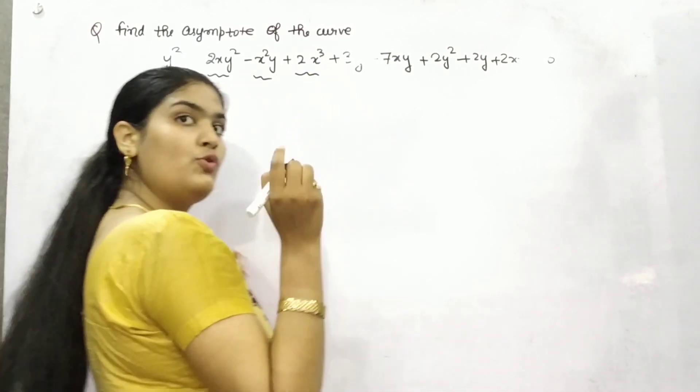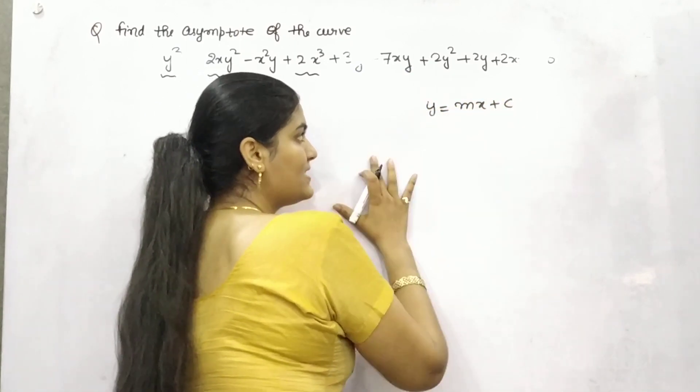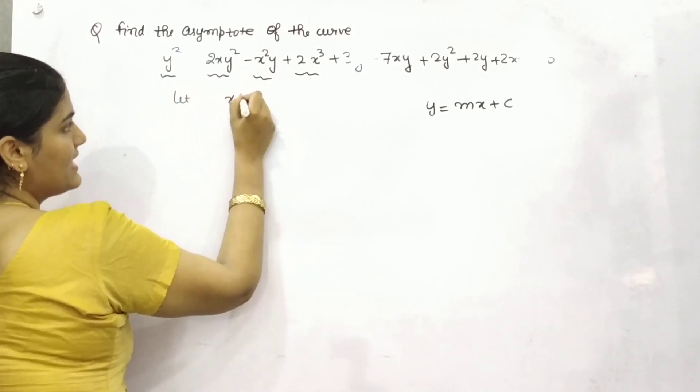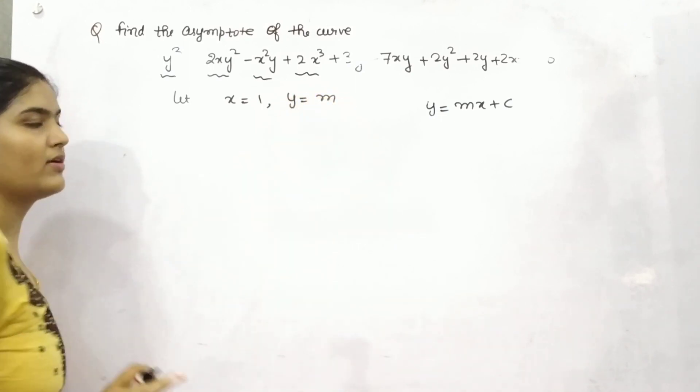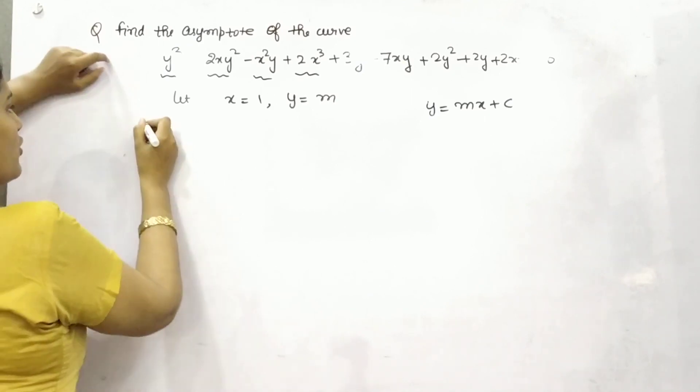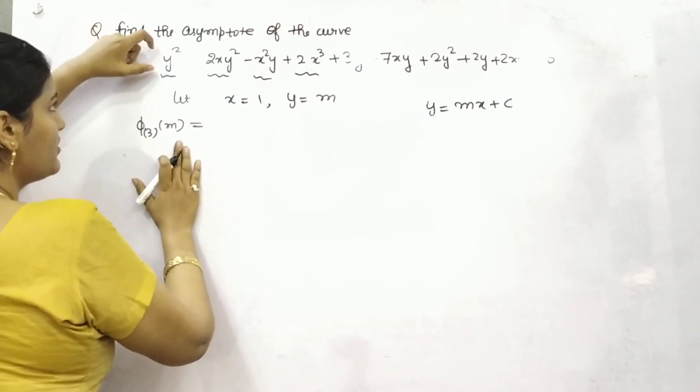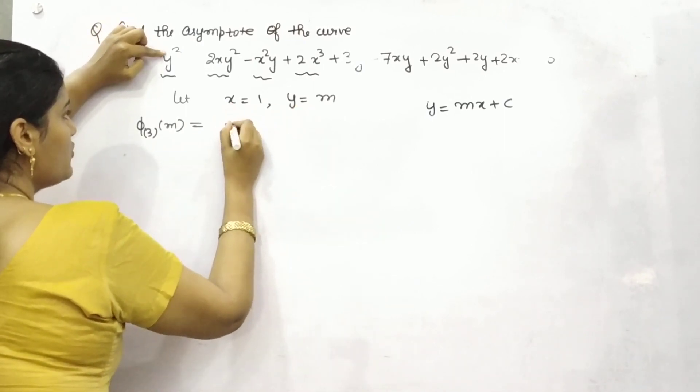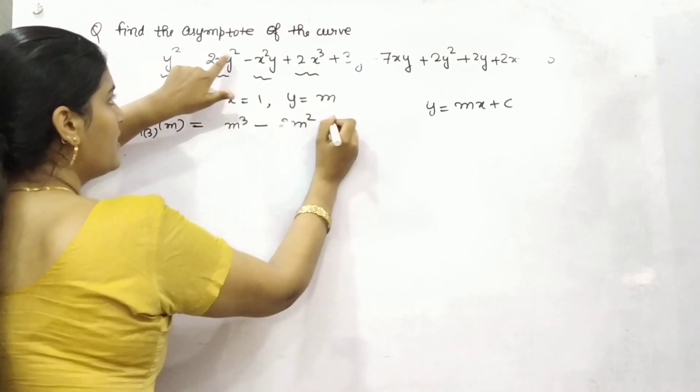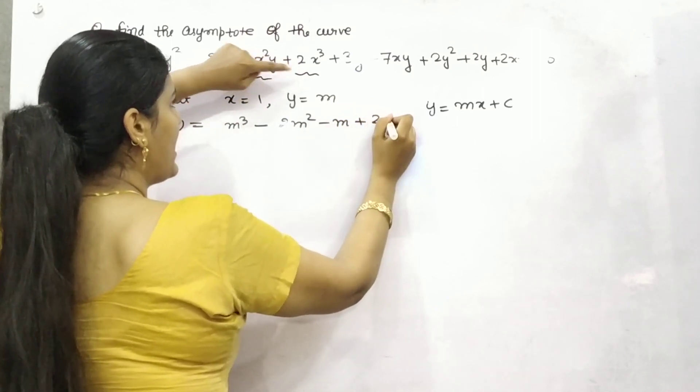Now because you know the slope intercept form is y equals mx plus c. So let's say your x is 1 and y is m. For first step you need to consider this. That means your third degree order of m, the value for function will become m cube minus 2 times 1 into m square minus 1 square into m plus 2, 1 cube is 1.